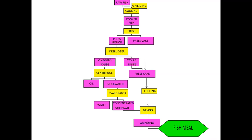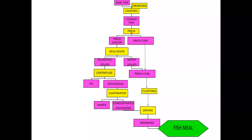Whatever raw fish is used, it must be chopped or ground into small pieces. After grinding, the material is fed into the cooker for heat treatment. Generally, cooking is applied for 20 minutes. After cooking, the cooked fish is fed into the screw press, where pressure is applied, releasing water, oil, and other materials.